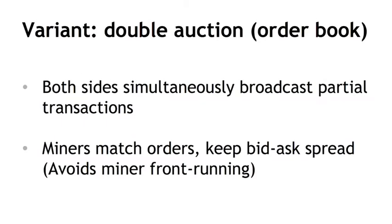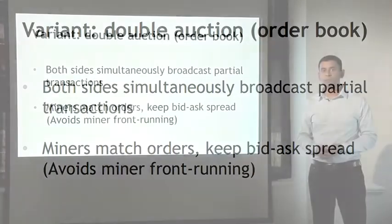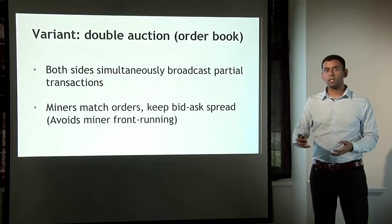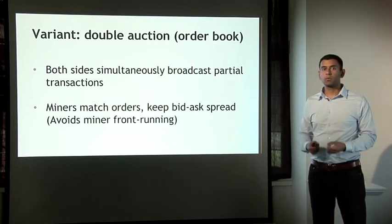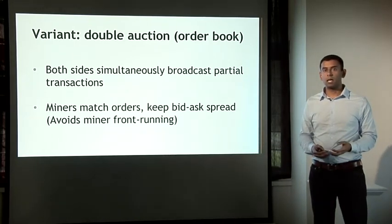Another interesting variant is the double auction, which happens when buying and selling stocks, where offers come from both sides — bids and asks. You need some party in the center matching these together. One way to achieve that is to have miners match these orders broadcast onto the P2P network, and allow miners to keep the bid-ask spread. One good property of doing it this way is that it avoids miner front-running — where a miner finds a good offer, ignores the incoming bid, creates their own bid, and gets a better deal.